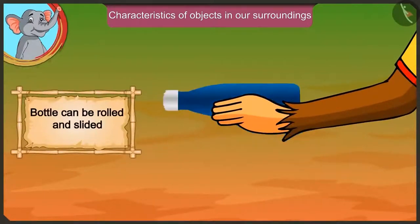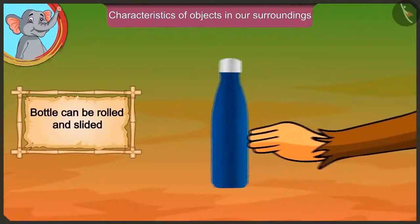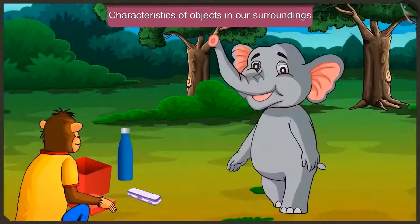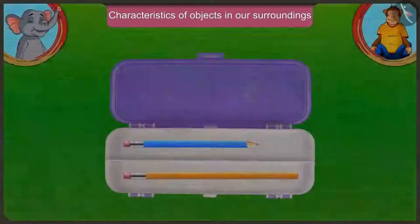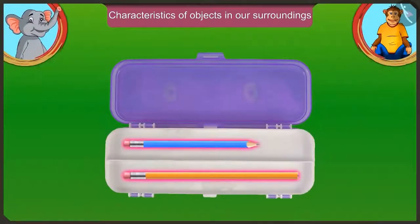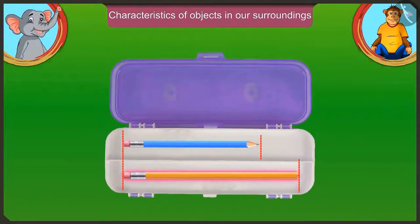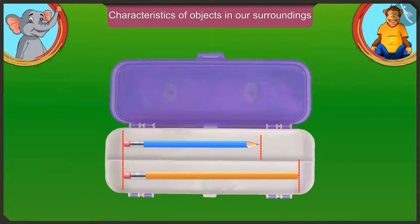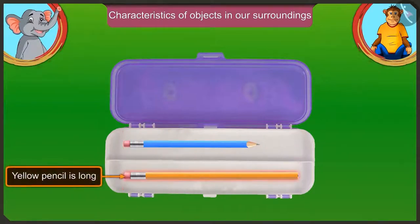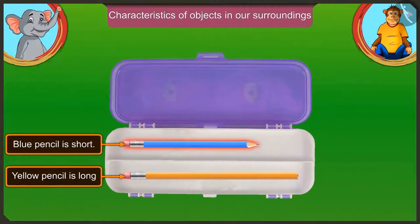We can roll this bottle and also slide and move it. What is there in this pencil box? There are two pencils in the pencil box. The yellow pencil is longer than the blue pencil, which means the blue pencil is short. The yellow pencil is long and the blue pencil is short.